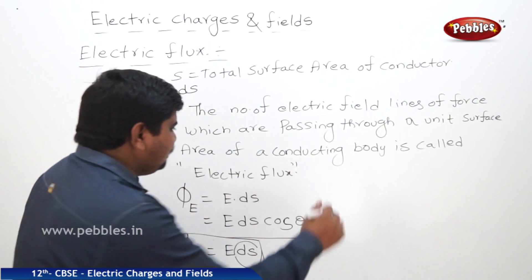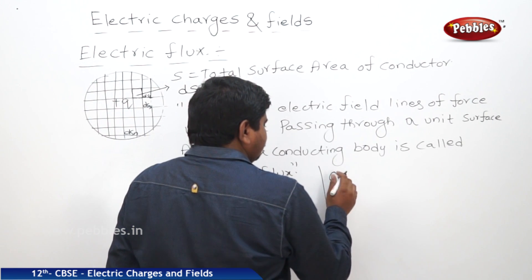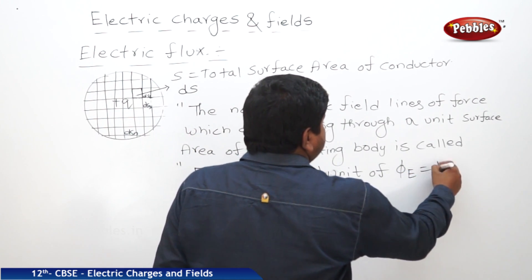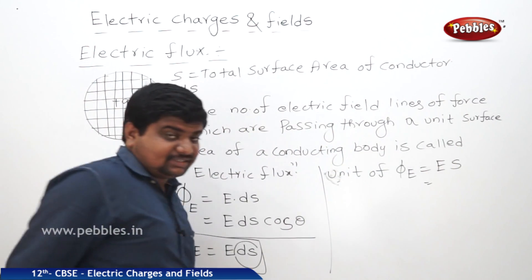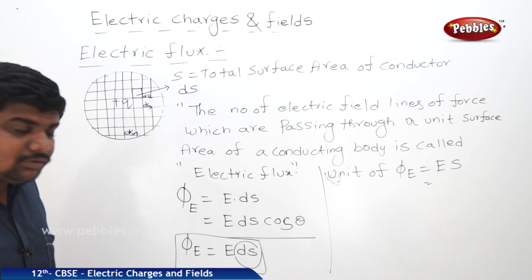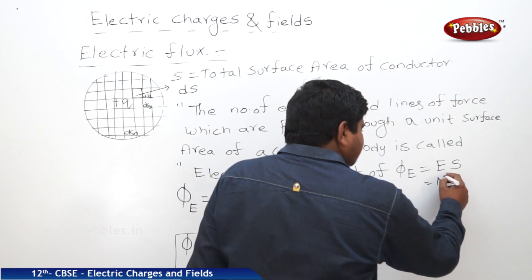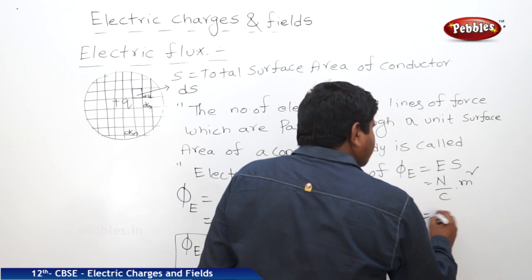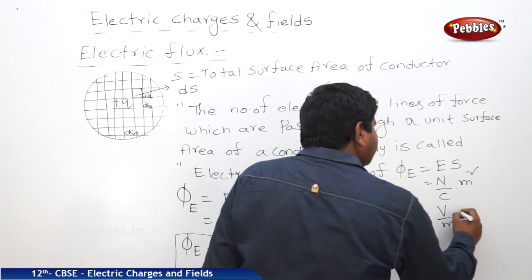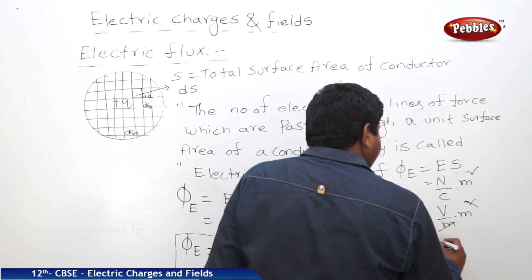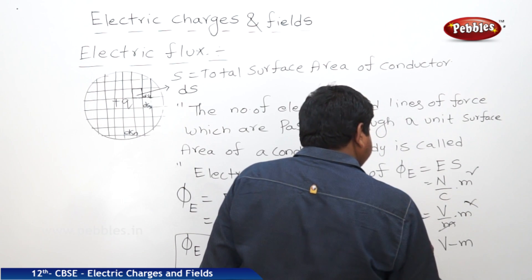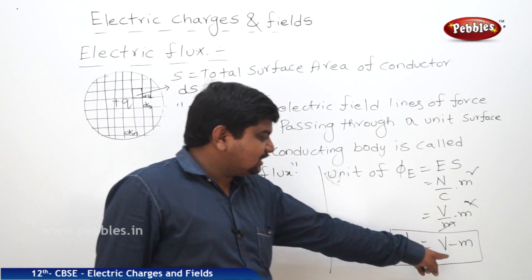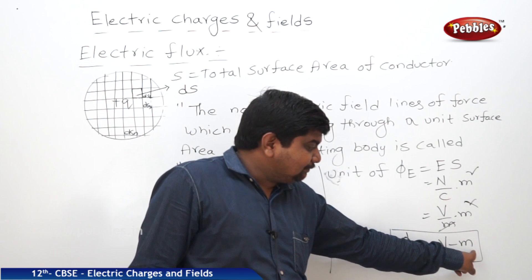This is the concept of electric flux. The unit of phi_E equals E times S. Electric field is Newton per Coulomb, and surface area is metre squared — or we can write volt per metre into metre squared, where m cancels, giving volt metre. The SI unit of electric flux is volt metre, where V represents volt and m represents metre.